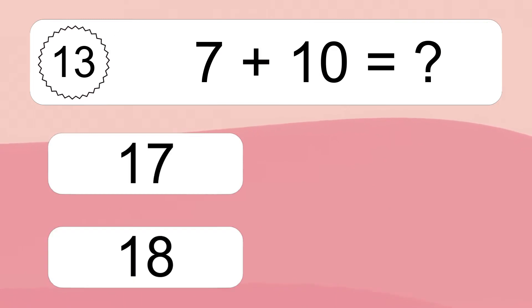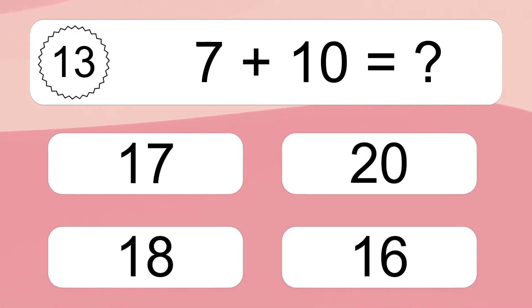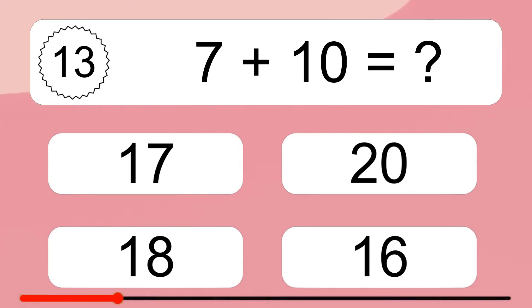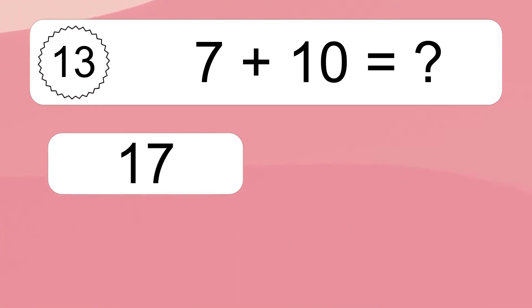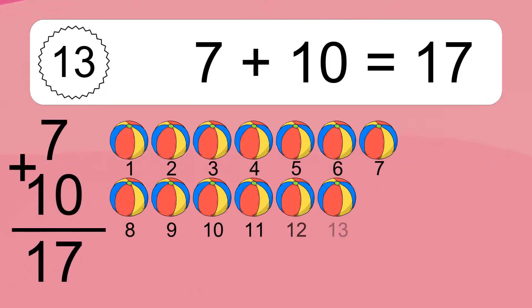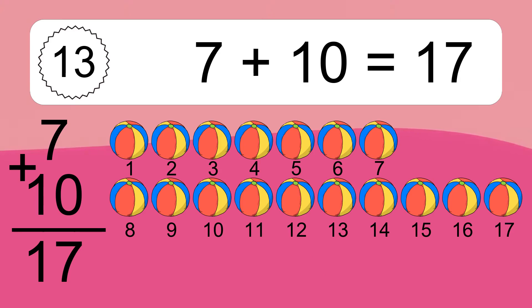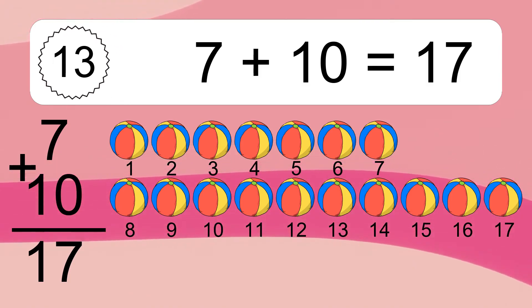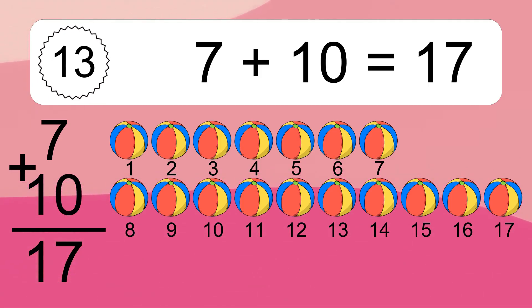7 plus 10 equals what? 7 plus 10 equals 17. Let's count it: 1, 2, 3, 4, 5, 6, 7, 8, 9, 10, 11, 12, 13, 14, 15, 16, 17.